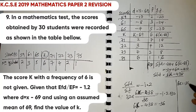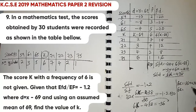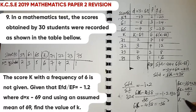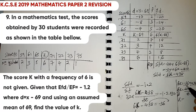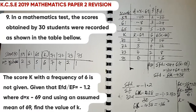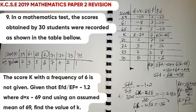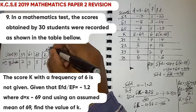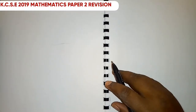Solving for k: 6k = -36 + 438 = 402, so k = 402/6 = 67. Therefore the score k represents 67.